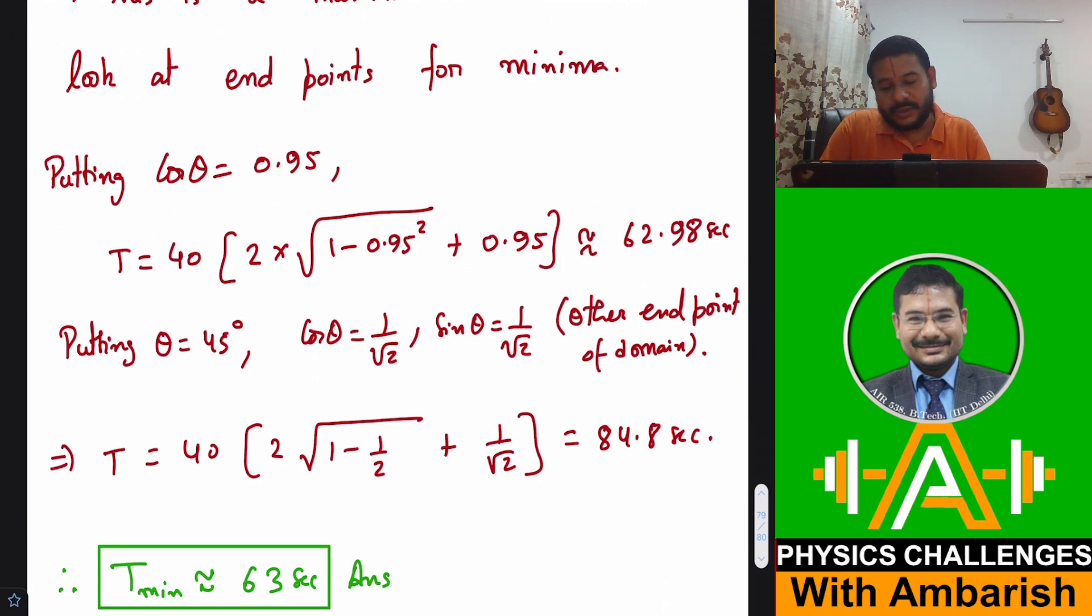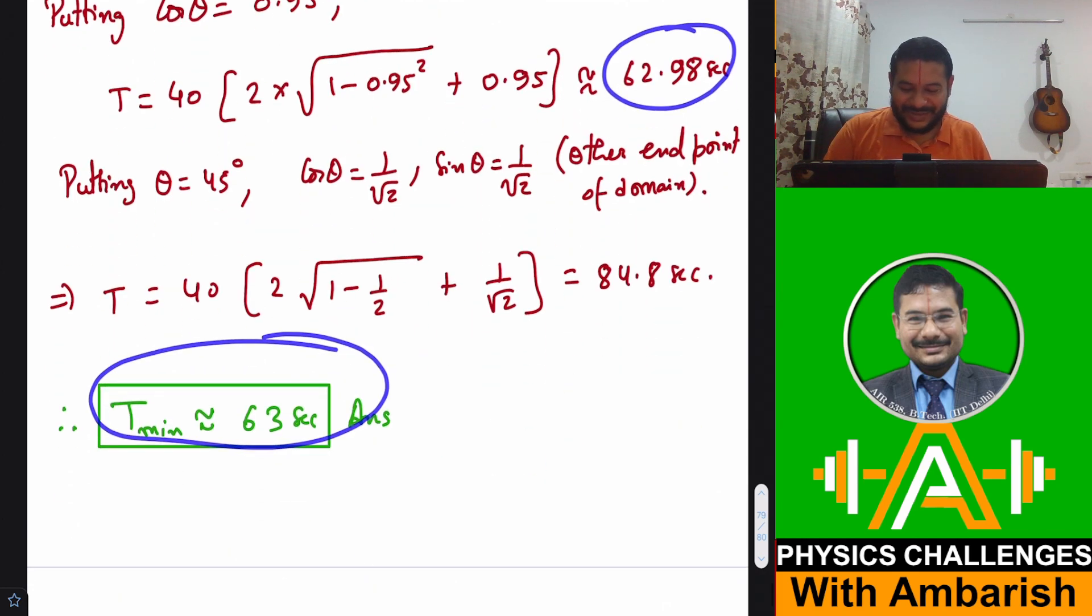So if you take the smaller of the two, finally you get minimum time being 63 seconds. It comes out to be 62.98, that is approximately 63 seconds.